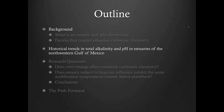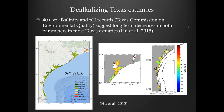Now let's switch attention to Texas and look at historical trends in total alkalinity and pH. In a study we did a few years ago, I got data from my colleague Paul Montagna. This is probably one of the very few long-term datasets of estuarine water quality in the country. I plotted the data and discovered there is a long-term decrease in both alkalinity level and pH level in most of the estuaries along the Texas coast.